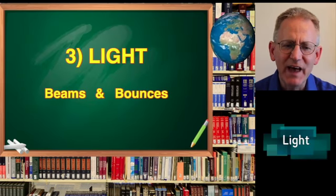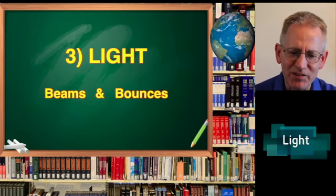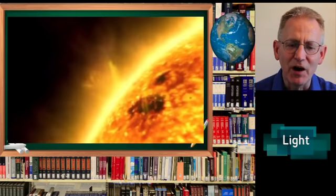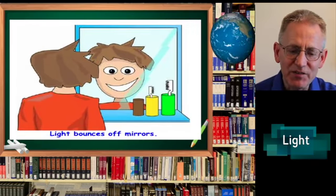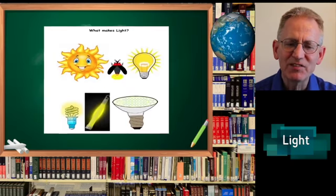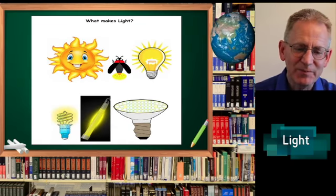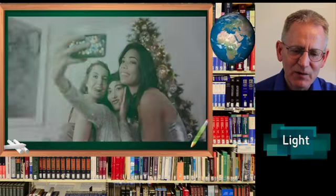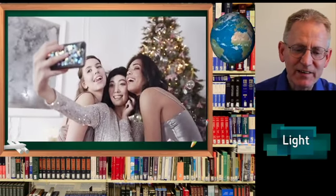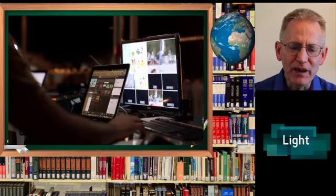Light beams and bounces. Sunbeams are light. Light bounces off mirrors. What makes light? These are examples. What do we do with light? We take selfies with light. We use glowing screens too.